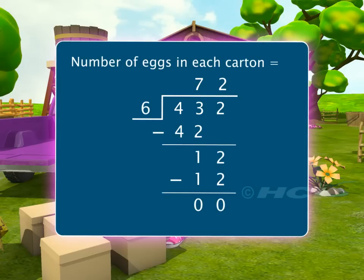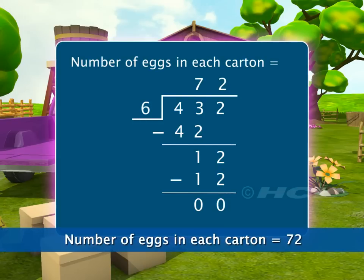Since there are no more digits in the dividend, the division is over. The quotient is 72. So, there are 72 eggs in each carton.